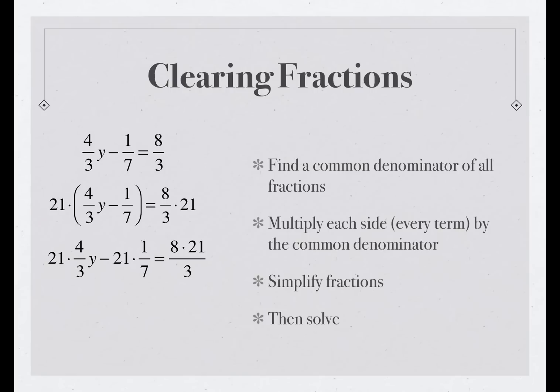When we simplify the coefficient of y, 21 times 4/3, 21 times 4/3 is 28, minus 21 times 1/7, that's 3. So we have 28y - 3 equals 8 times 21 over 3, which is 56. And again, that can easily be solved and checked, and I'll leave that as an exercise for you.